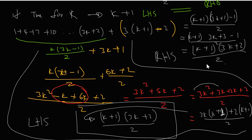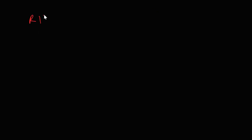Looking at both sides, the right hand side and the left hand side are the same — k plus one times three k plus two, all over two. So we can conclude that the right hand side equals the left hand side.